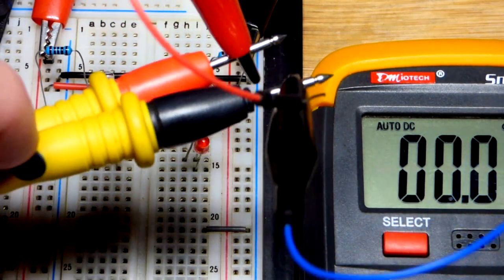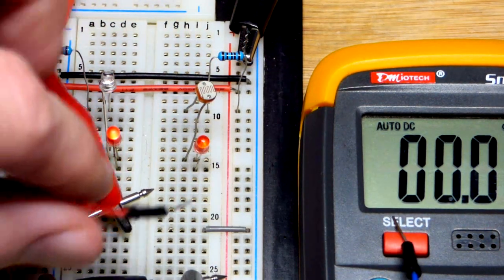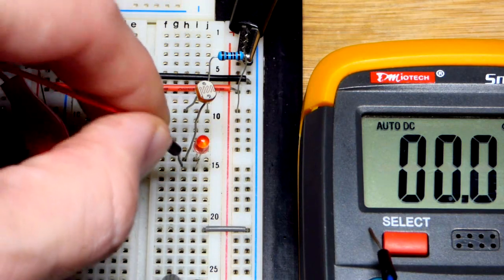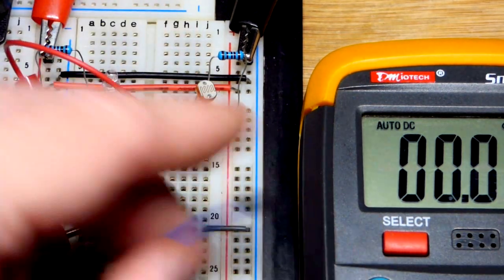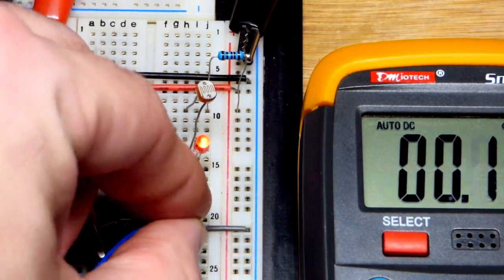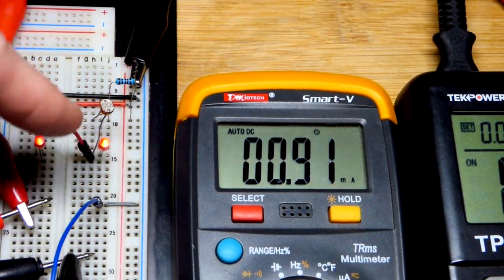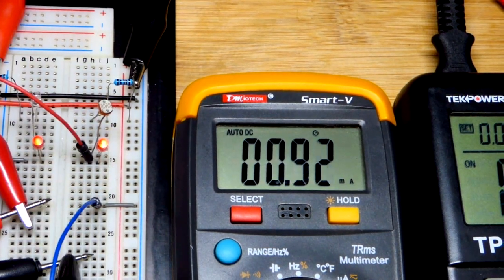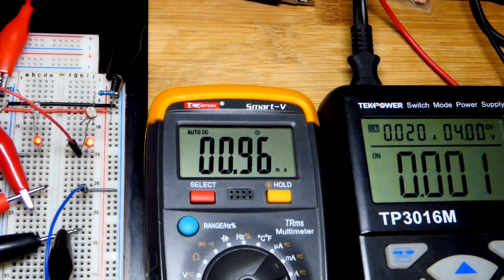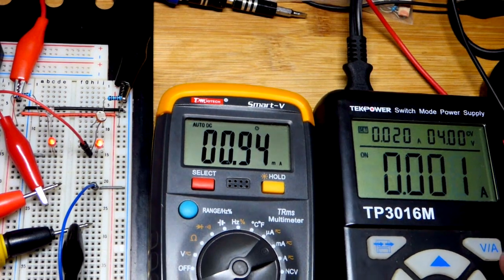To get a more accurate idea of what the current actually is, we got the multimeter probes here. We're going to measure the current, so we have to open the circuit. We're going to do the light dependent resistor one first. You can see that the LED lit up because now current is also going through the meter.